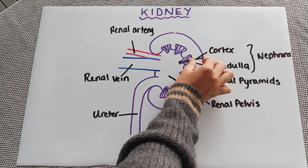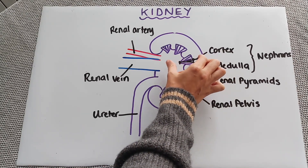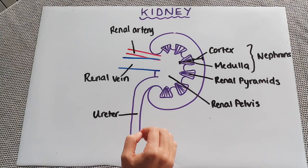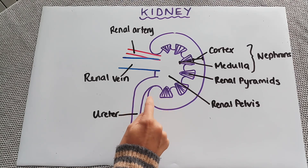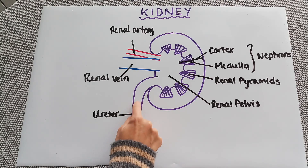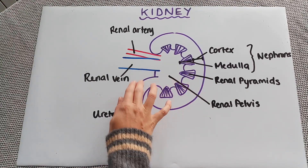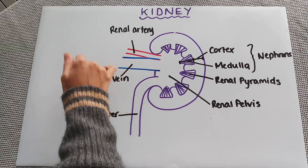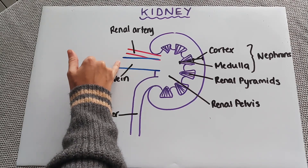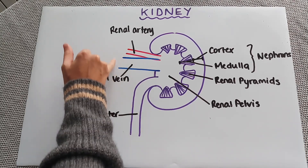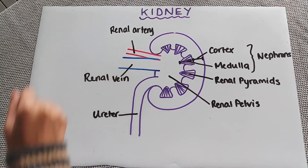Some key things you must remember when drawing the kidney: your cortex needs to be about one-fifth of the width of the kidney — it shouldn't be half or more of the width or you won't get a mark for it. Make sure your pyramids are actually pyramid-shaped, not circles or squares. Your ureter needs to join up with your renal pelvis so there is flow from one to the other. Finally, your renal artery needs to be a smaller diameter than your renal vein — the lumen of the artery is narrower than the lumen of the vein.